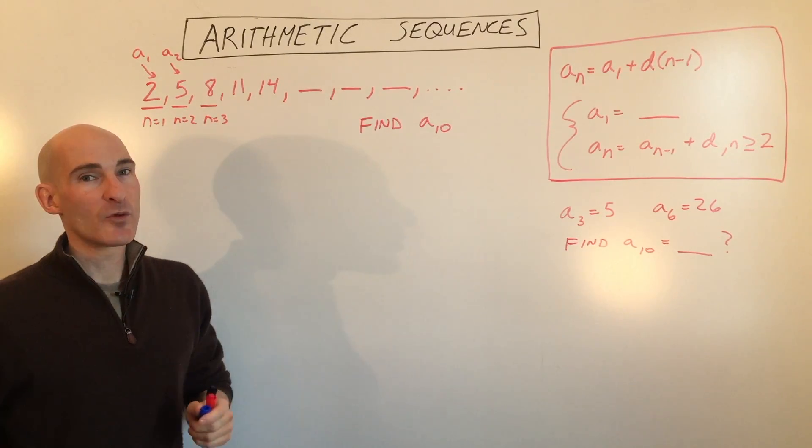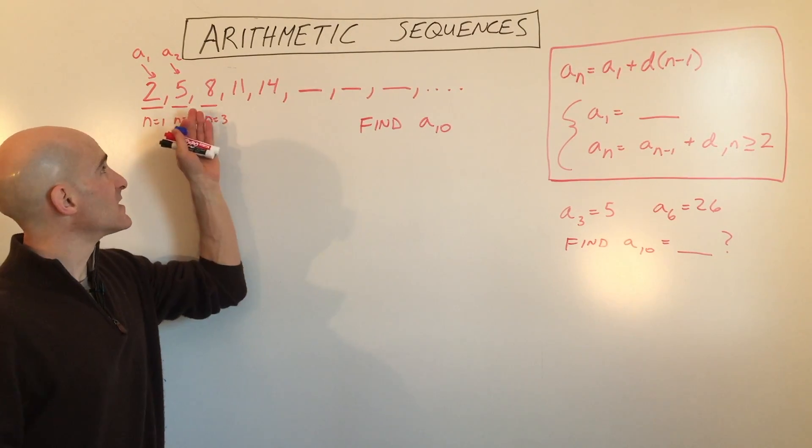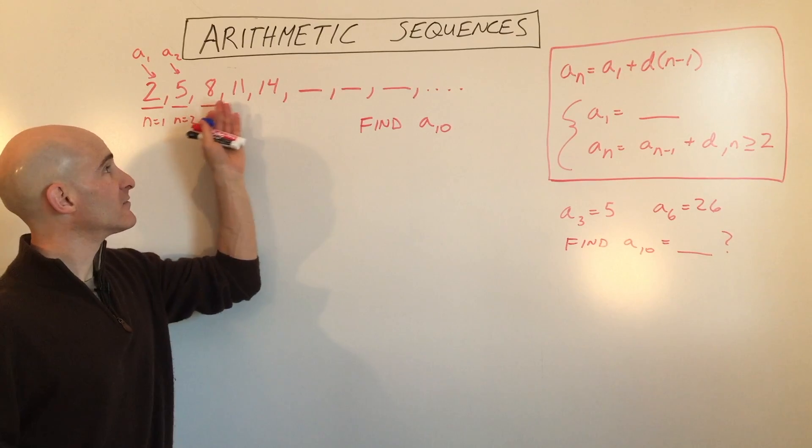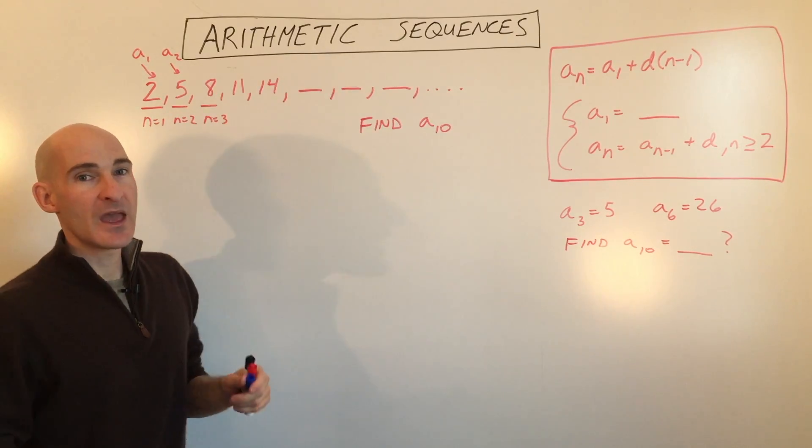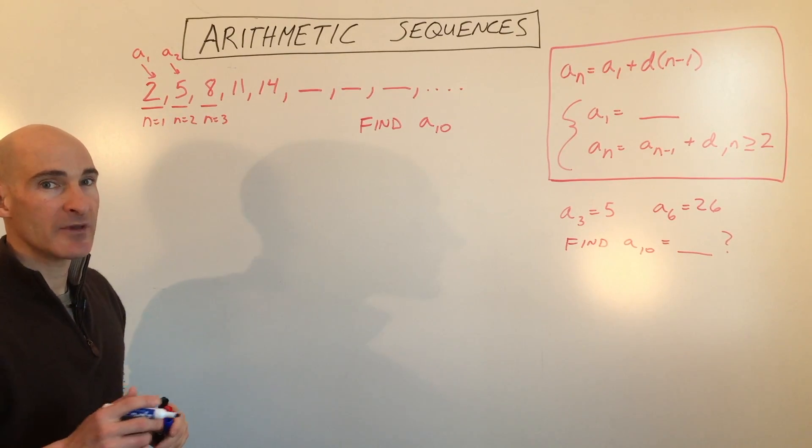What is an arithmetic sequence? Well, basically what a sequence is, it's a list of values or numbers, and there's two different things going on here that you want to pay attention to.